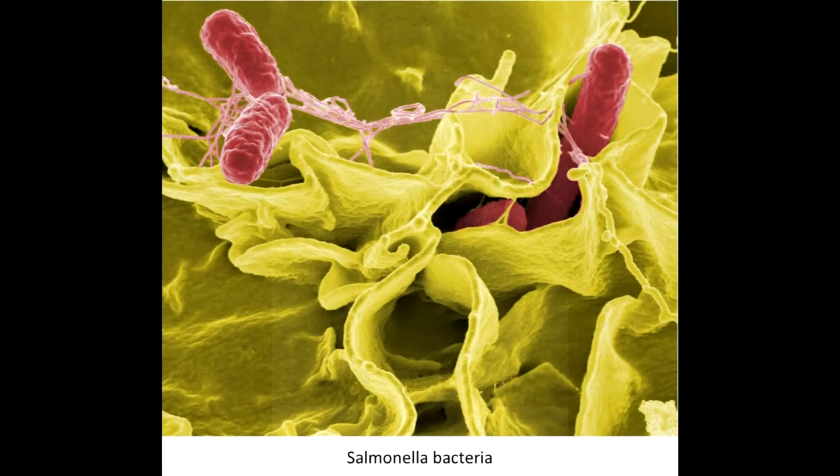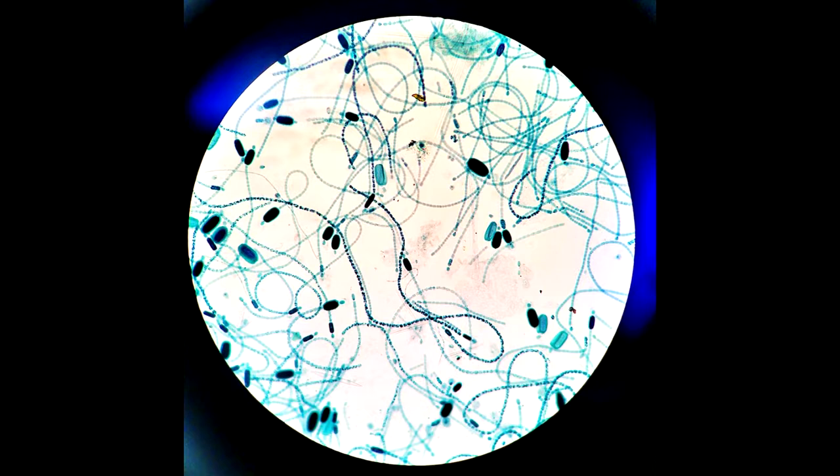Monera is Greek meaning solitary, as they are unicellular organisms with no cell membrane. Bacteria is an example of this taxonomic kingdom. An exception to this rule is cyanobacteria, which are classified elsewhere, as they obtain their energy through photosynthesis.